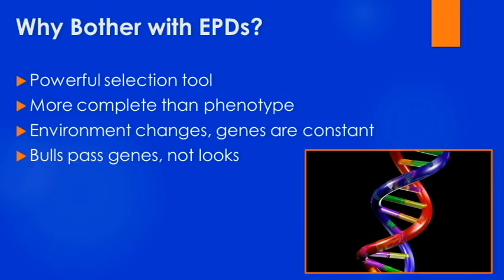So why bother with EPDs when selecting a bull for your operation? EPDs are a very powerful selection tool. They provide much more complete information than looking at the bull's phenotype alone. The bull's phenotype refers to the tangible characteristics — how the bull looks, how much he weighs, things of that nature. EPDs look at the genetic potential of that bull's calves. Phenotype will change with the environment, but genetic potential is constant. Bulls pass on genes, not looks.